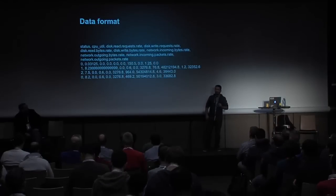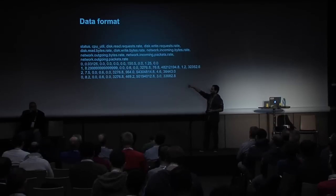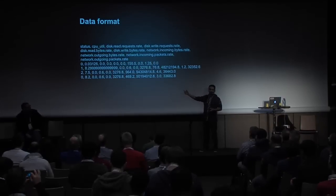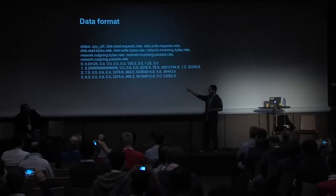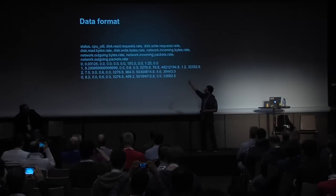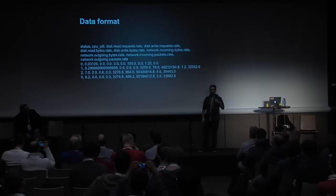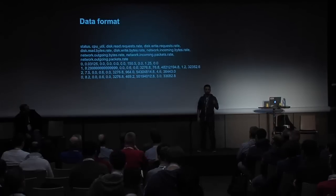This is the data once it's processed. We've got the headers. The first column will be the type of activity — the class. Then each line represents five seconds of activity in our cluster, and each line also represents one bit of resource, so let's say one VM or one volume.